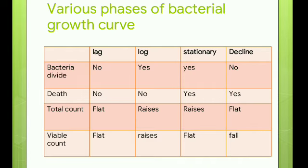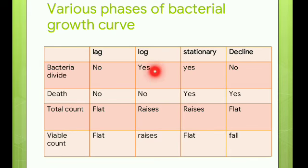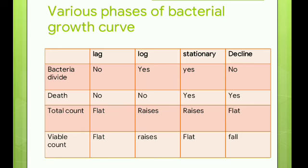In the lag phase, there is no bacterial division and no death of bacteria, so the total count is flat — no increase nor decrease — and the viable count is also flat. In the log phase, bacteria divide but there is no death, so the total count rises as bacteria divide and the viable count is also increased in the log phase.